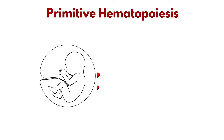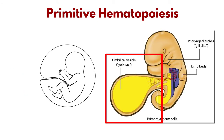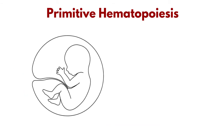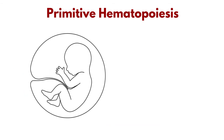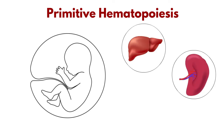Primitive hematopoiesis, wherein the embryo produces only red blood cells that can provide developing organs with oxygen, begins in the embryonic yolk sac. As the embryo continues to develop, the hematopoiesis process moves to the liver, the spleen, and bone marrow.